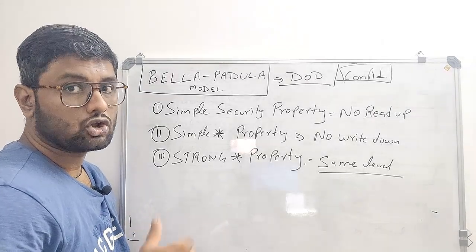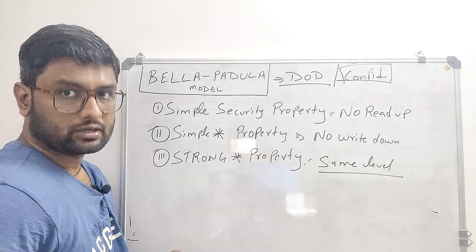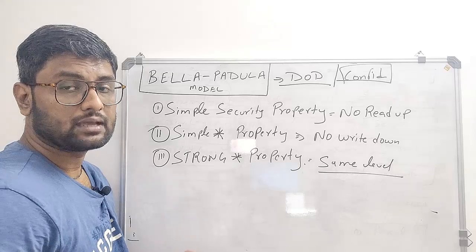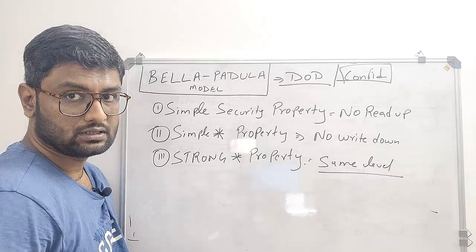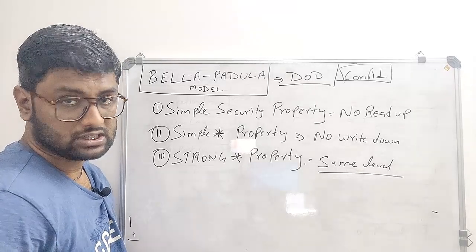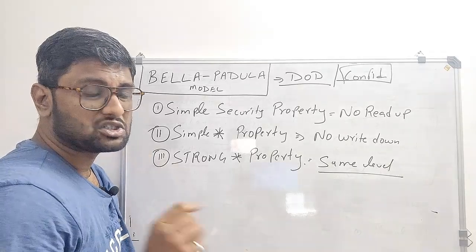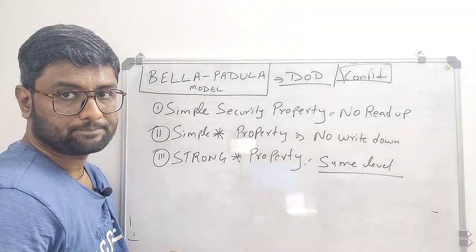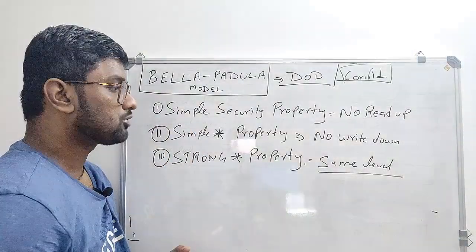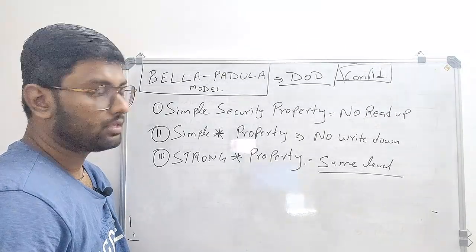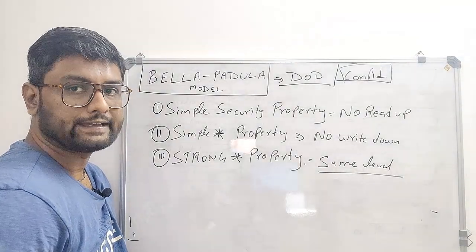A security model dictates how a subject communicates with an object. When you build a product, you need to understand how subjects communicate with objects, and security models provide the logic for that. The Bell-LaPadula model has three rules: Simple Security Property, Star Property, and Strong Star Property. The first — Simple Security Property — means no read up.